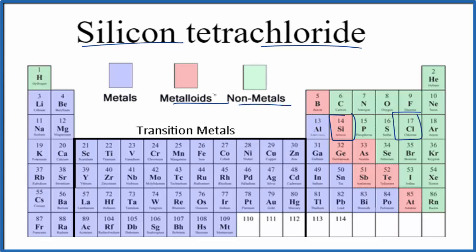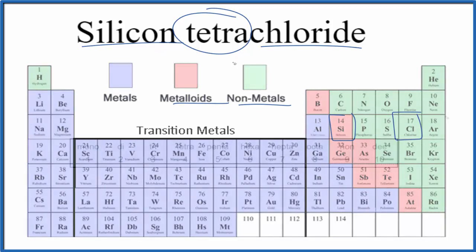We have a metalloid and a nonmetal, so we have a molecular, also called a covalent compound. That's why we have the prefixes here, and we need to take these prefixes into account when we write the formula for silicon tetrachloride.